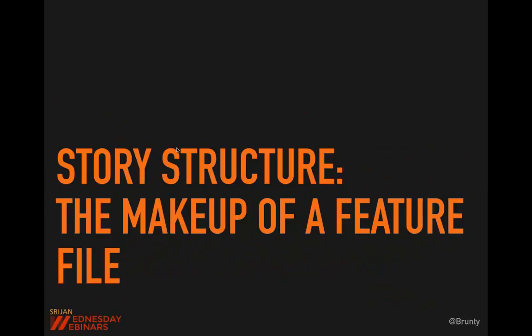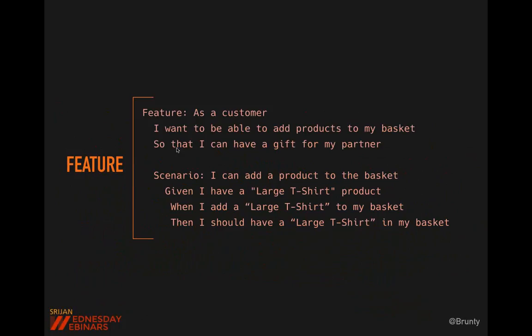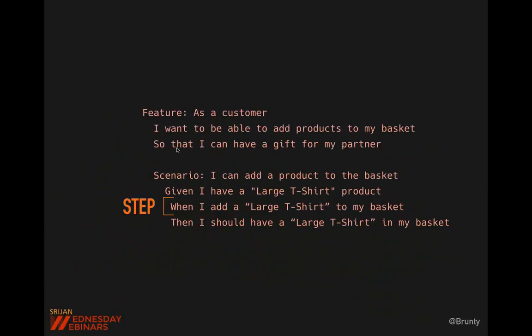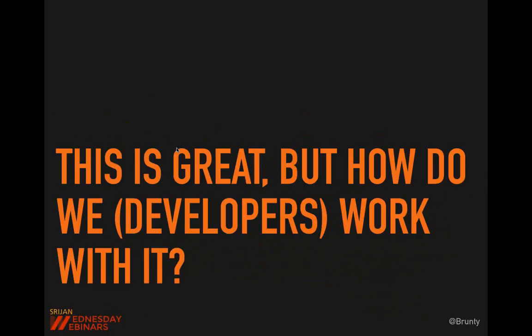So what does a full feature file look like? The whole thing is our feature — this is everything. Within that we have the scenario itself — the example being tested within the feature file. And within that we have the steps — the actions that enable the scenario to occur. That's the basic makeup of a feature file. As a developer, the code under the surface is connected via step definitions. In Behat, a step definition allows you to map a step to an executable piece of code.